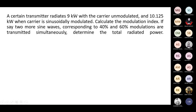Take this problem. The unmodulated carrier power is given — unmodulated means it is the carrier power — and 10.125 kilowatt is the total power when the carrier is sinusoidally modulated. Calculate the modulation index. Then, if two more sine waves corresponding to 40 and 60 percent modulations are transmitted simultaneously, determine the total radiated power.